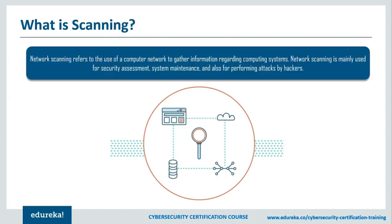Network scanning consists of network port scanning as well as vulnerability scanning. Network port scanning refers to the method of sending data packets via the network to a computer system's specified service port to identify available network services on that system. This procedure is effective for troubleshooting system issues or tightening system security. Vulnerability scanning is a method used to discover known vulnerabilities of computing systems on a network, helping detect weak spots in application software or operating systems that could be used to crash or compromise the system.